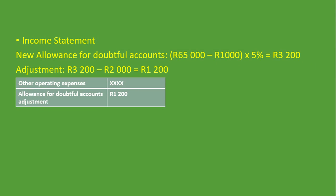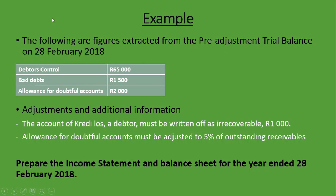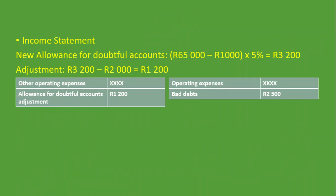Now, how do we record Bad Debt in the Income Statement? In the Pre-Adjustment Trial Balance we have Bad Debt of R1,500, and under Additional Information we have Bad Debt of R1,000. We add them together: R1,500 plus R1,000 gives a total of R2,500. Under Operating Expenses, we put Bad Debt at R2,500. That's how we record Bad Debt in the Income Statement.